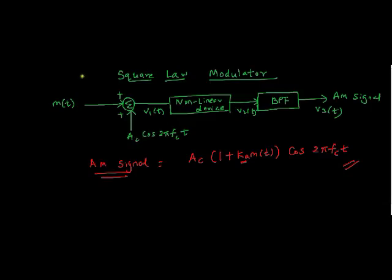First among them, we will see about square law modulator. This is the typical diagram. I will explain. This is my message signal m(t), and this is my carrier Ac*cos(2πfct). First what I will do, I will give these two signals as input to the summer. What this summer will do, it will just add these two signals.